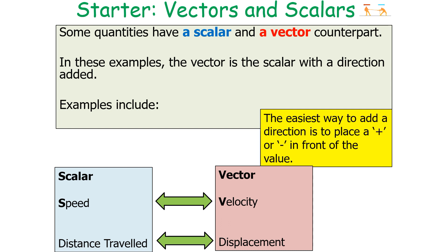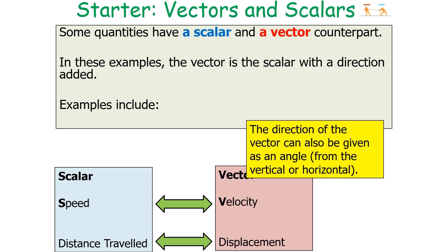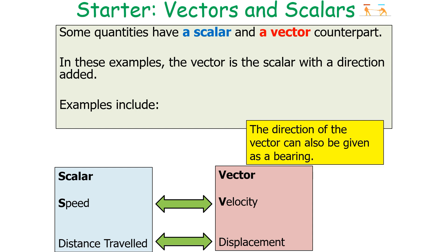The easiest way to add a direction is to place a plus or minus sign in front of the value. For example, plus 20 metres per second and minus 20 metres per second show velocities where the objects are moving in opposite directions. The direction of a vector can also be given as an angle from either the vertical or horizontal axes, or as a bearing — remembering that bearings always measure angles clockwise from north.